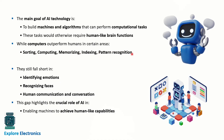There are some areas where computers perform better than humans: sorting, computing, memorizing, indexing, and pattern recognition. Computers can store and recall information easily, unlike humans who forget things. However, AI falls short in understanding human emotions, recognizing faces, and communicating as naturally as two people do. These are the areas AI has to improve on, highlighting the crucial role of AI in achieving human-like capabilities.